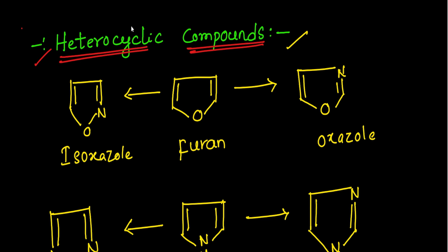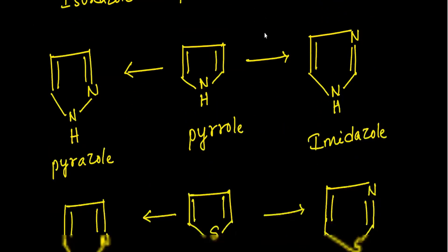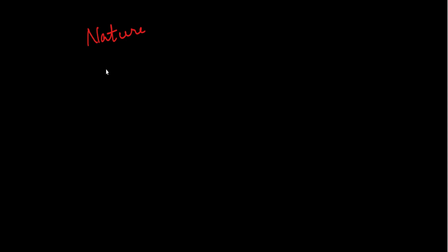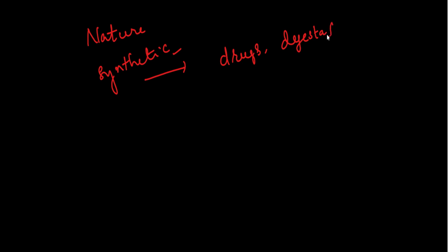Heterocyclic compounds are of many types. They are widely distributed in nature. Some heterocyclic compounds are naturally obtained while others are artificially or synthetically prepared. These compounds are generally used in pharmacological products and find applications as drugs and dye stuffs and as polymers.